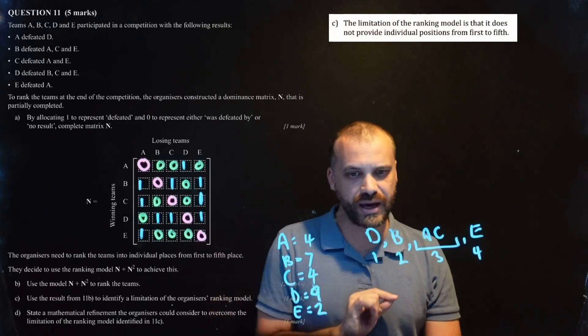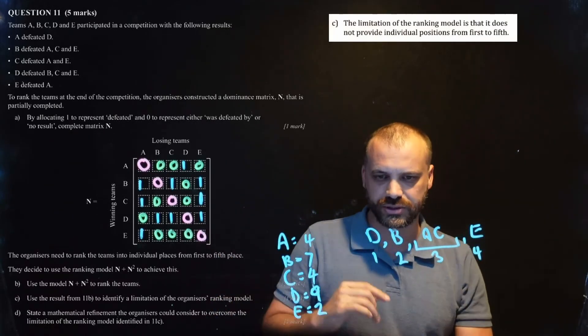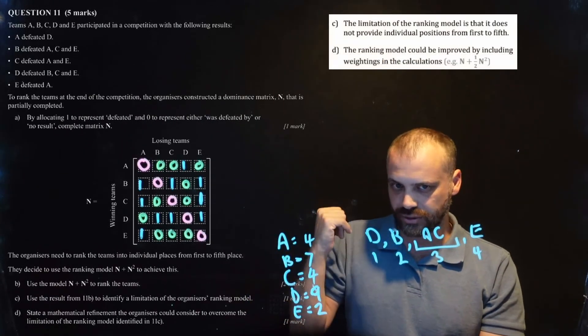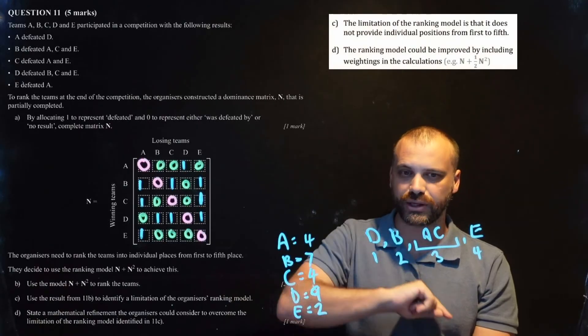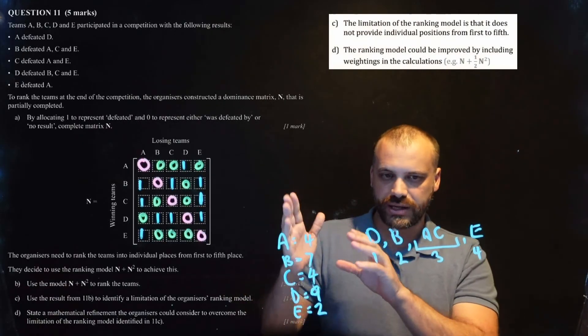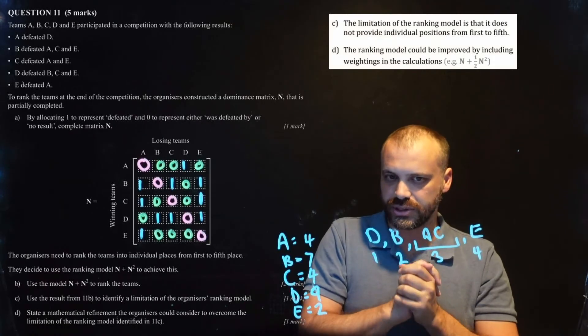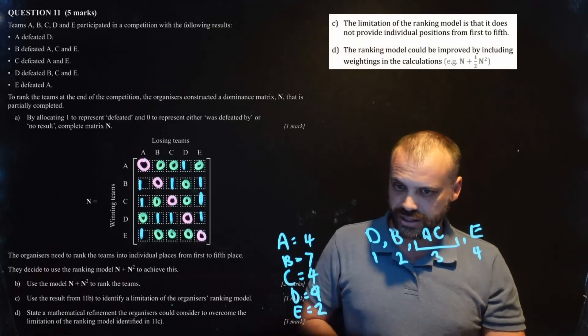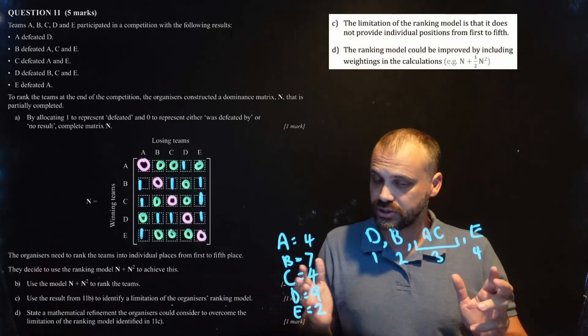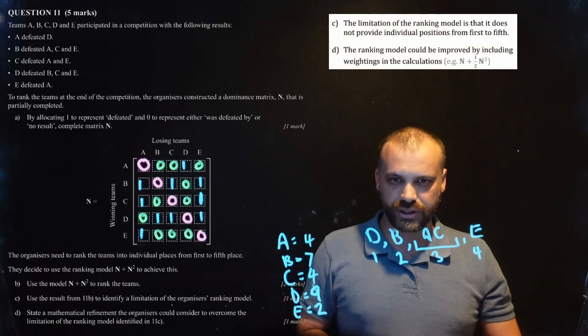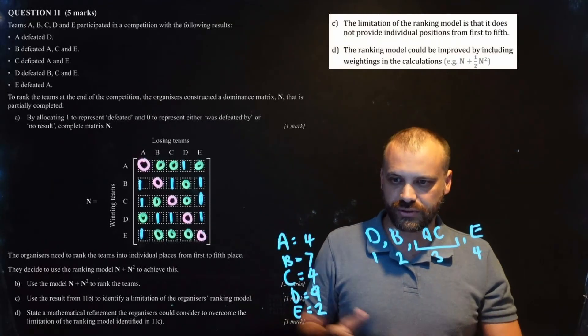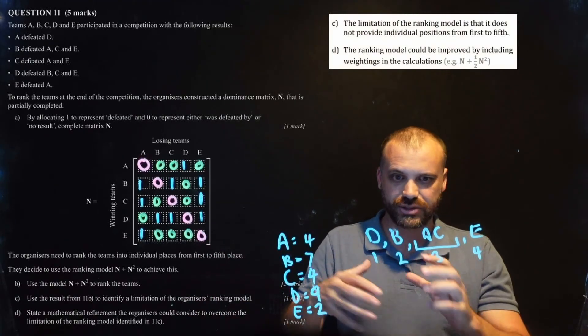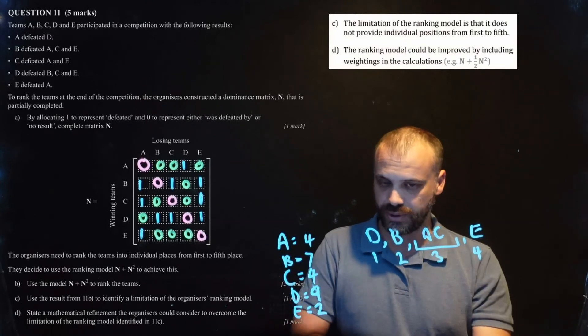Okay. Part D. State a mathematical refinement. So, based on that limitation, what could they do instead? Well, QCAA says that the ranking model could be improved by including weightings in the calculation. Weighting the second order dominance lower than the first order dominance. Now, presumably, when you do that, you fix this ranking issue. But, possibly not. It depends on what sort of thing we've got going on here. But, this is what the QCAA was looking for with these two questions. Now, these sorts of questions are fairly rare. They don't happen very often where you're asked to describe something like this. But, here we are.